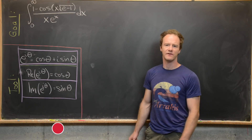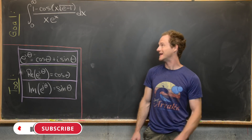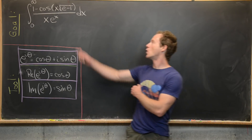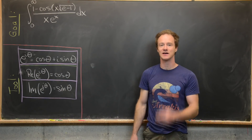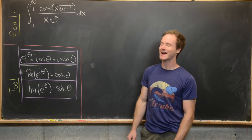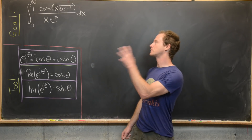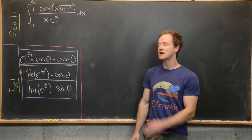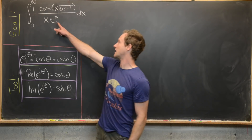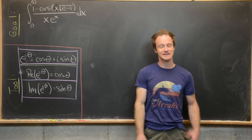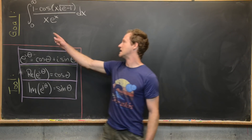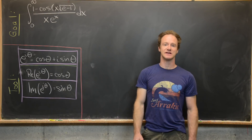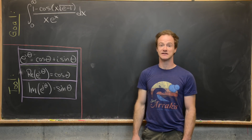Here we're going to look at what I think is a pretty creative and interesting solution to an equally interesting integral. We have the integral from zero to infinity of one minus cosine of x, times the square root of e minus one, over x times e to the x. What's really interesting is we've got all of these transcendental numbers and transcendental functions — e to the x, cosine, and an e inside a square root — plus an improper integral. But as we'll see, the evaluation ends up being quite nice and simple.